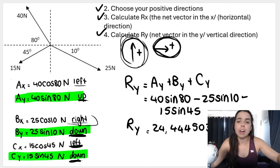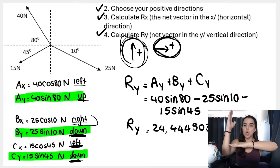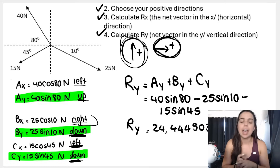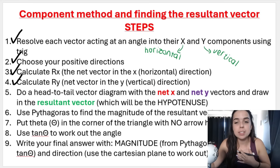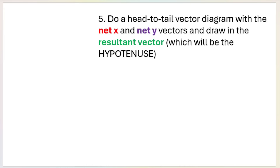Once you have R-x and R-y — one vector in the x direction and one vector in the y direction — you can make a 90-degree triangle. You use Pythagoras to work out the magnitude of the resultant and tan theta to work out the angle. Step five is to draw a head-to-tail diagram with your resultant x and resultant y, then draw in the overall resultant vector as the hypotenuse, use Pythagoras, use tan theta, and then state your final answer.